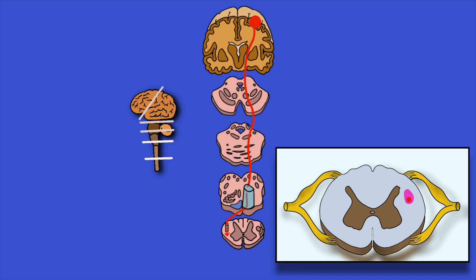At each segmental level, the upper motor neuron leaves the bundle and travels to the gray matter — specifically the anterior horn — where it synapses on the cell bodies of lower motor neurons. The lower motor neuron, shown here in green, leaves through the anterior spinal rootlets and travels into the periphery to innervate muscle.